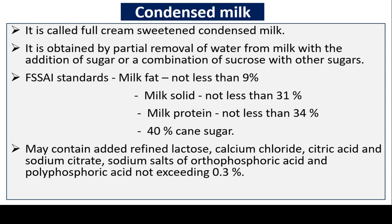Condensed milk is called full cream sweetened condensed milk. It is obtained by partial removal of water from milk with the addition of sugar, or a combination of sucrose with other sugars. FSSAI standards: milk fat not less than 9%, milk solids not less than 31%, milk protein not less than 34%, and cane sugar should be at least 14%.